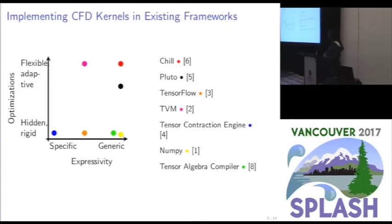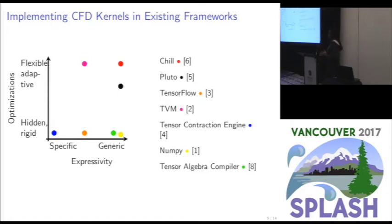Both CHILL and TVM have the same level of flexibility in how we can apply transformations, providing constructs for the user to implement their own transformation sequences. On the other hand, Pruto is a bit less flexible — we have to tell Pruto what kind of optimization to apply, and then Pruto decides itself the best heuristic. We also have more domain-specific tools with hidden heuristics, like the tensor contraction engine built for quantum chemistry, and TensorFlow, which is more generic.